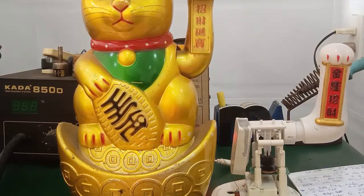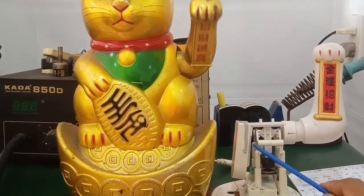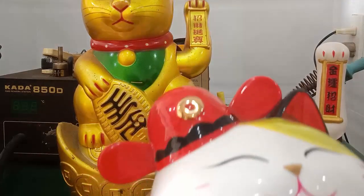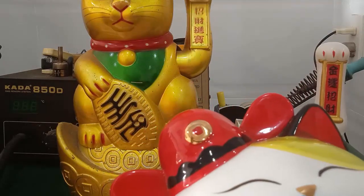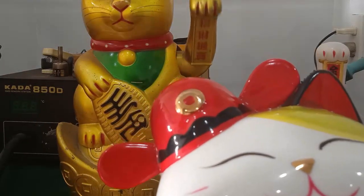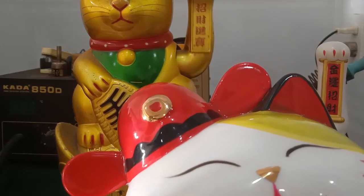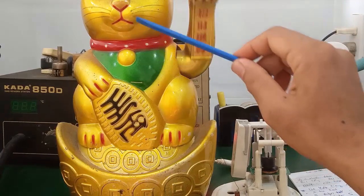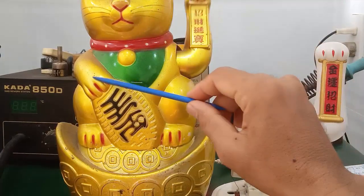Thì giữa cái mèo bằng sứ này, nó có ưu điểm là nó sáng đẹp hơn, và nó ít bị phai màu hơn. Đây là con mèo bằng sứ. Thì đây lúc nào cũng sáng bóng, còn con mèo này, sau một thời gian sử dụng, thì nó sẽ có những cái đốm, đồng thời cái màu nó phai hơn.